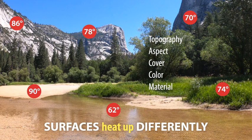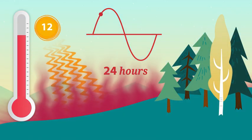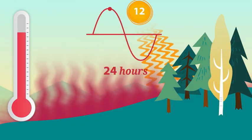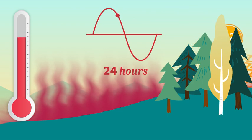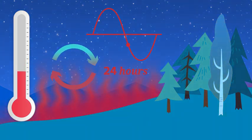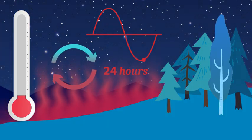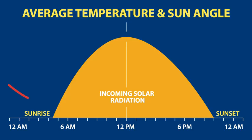Bodies of water gain and lose heat slower than land, so during the day they are often cooler than the land, while at night they are often warmer. The earth emits longwave radiation 24 hours per day, but only receives shortwave solar radiation for around 12 hours per day. Once the sun sets, the source of heating to the planet's surface goes away. As the earth emits longwave radiation off to space, the surface cools down. This cold nighttime surface then conducts heat away from the air closest to it, reducing air temperature. This explains why the coldest part of a 24-hour period is just after sunrise, since at that time the earth has been without the sun's heat for the longest.